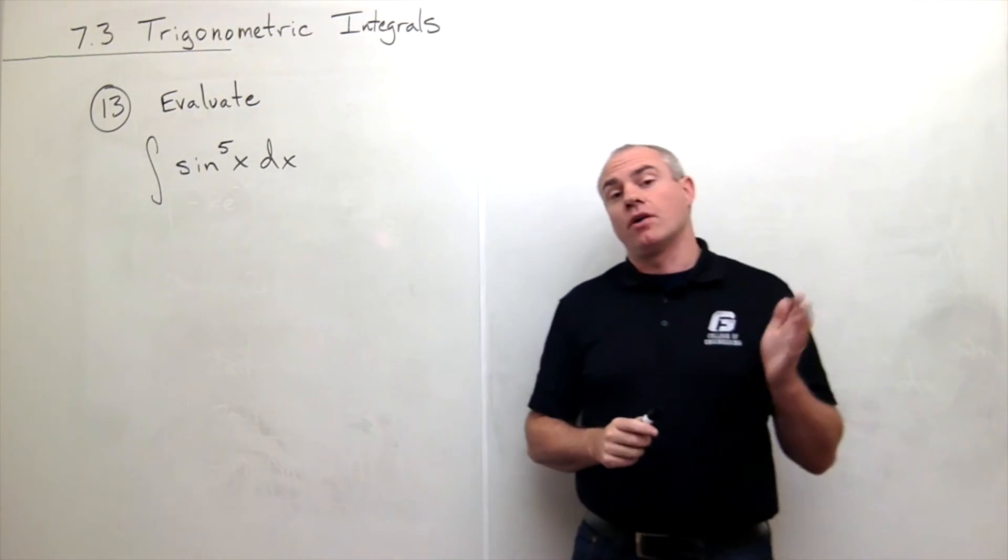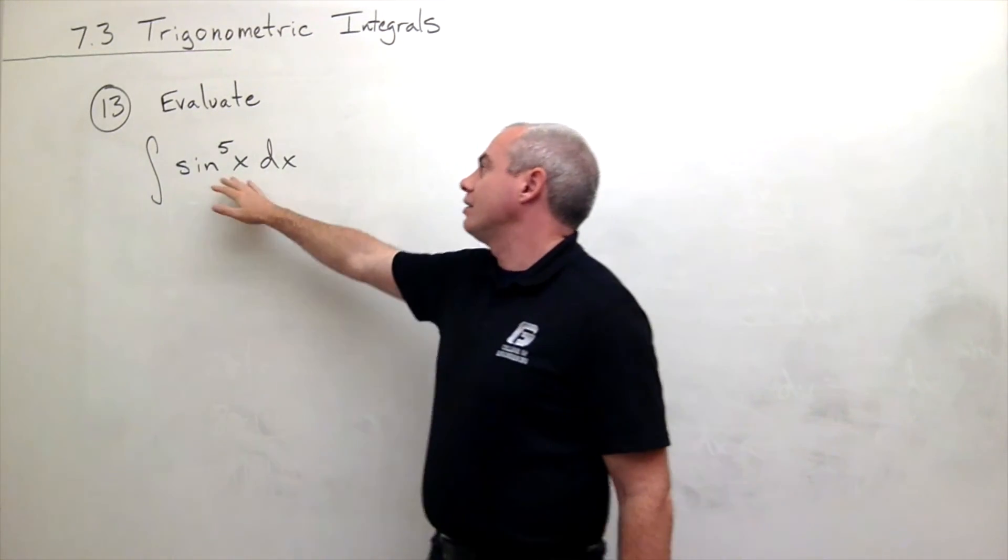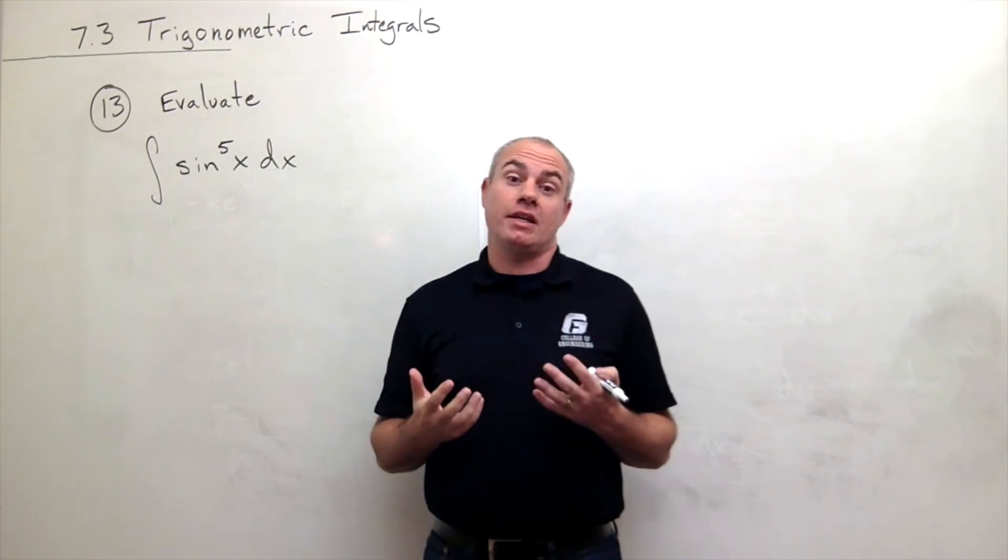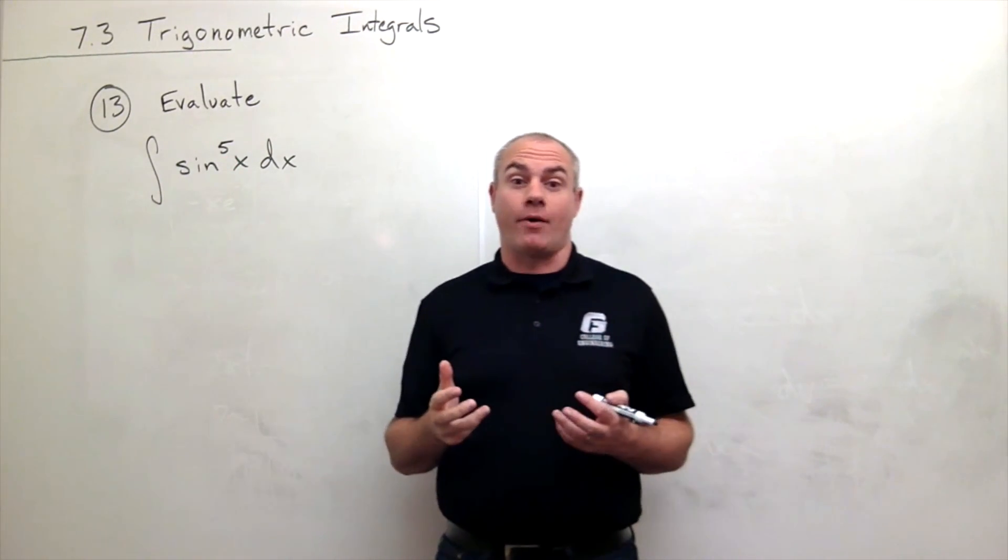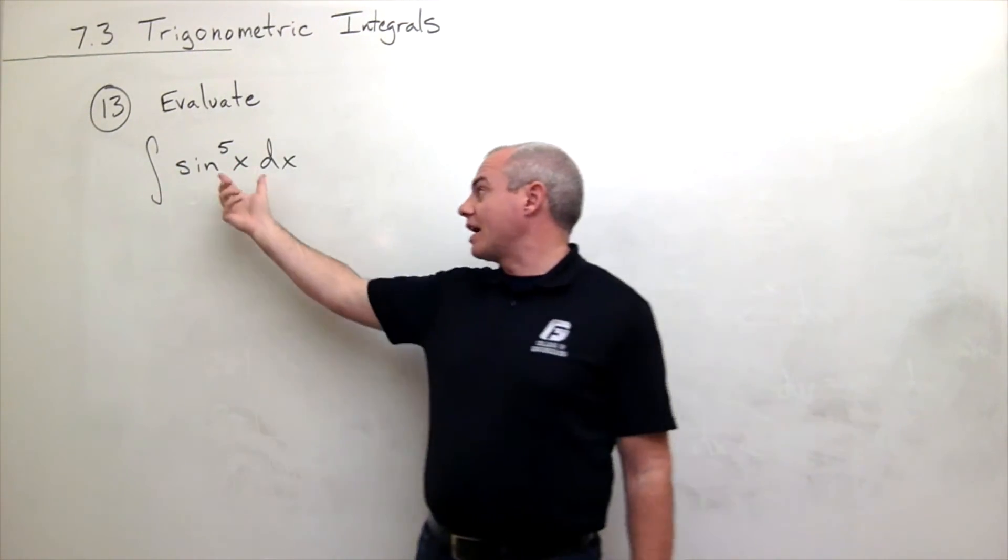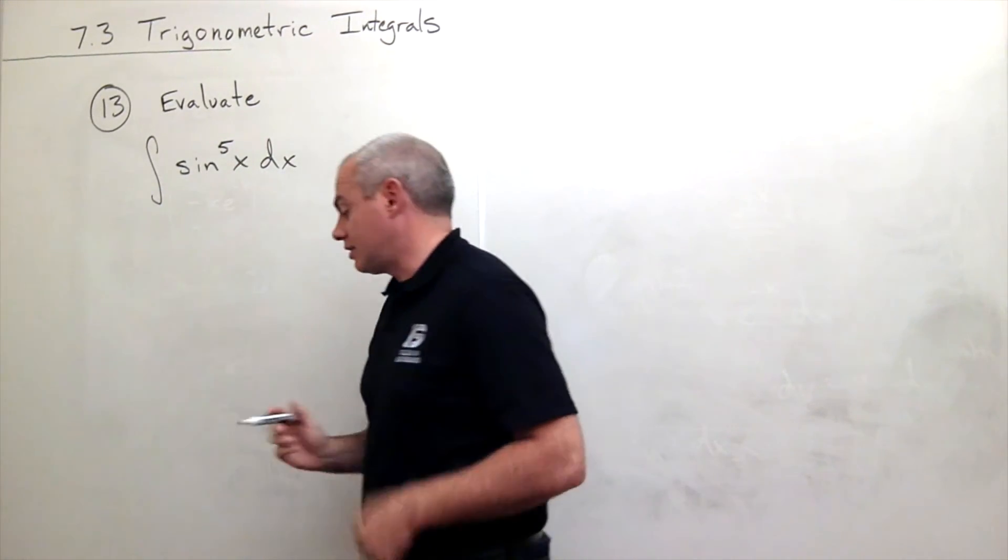So the first thing is we see that we have sine raised to the fifth power. And the real key piece here is that the fifth power is an odd power. And if I have a sine of x raised to an odd power, then I know exactly what I need to do.